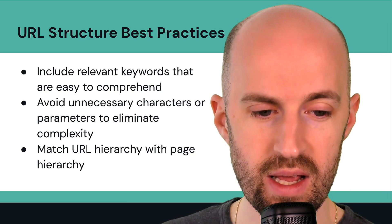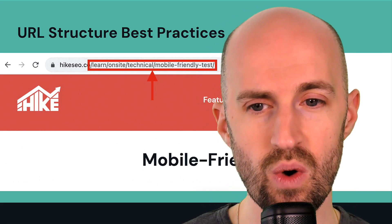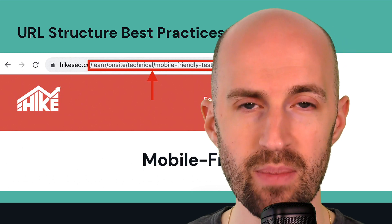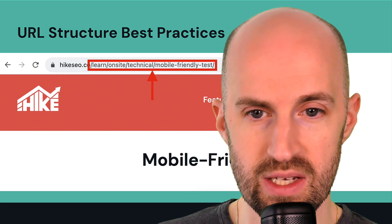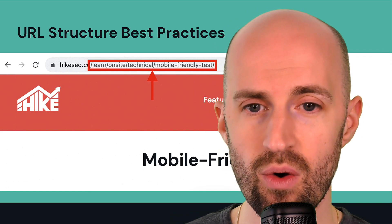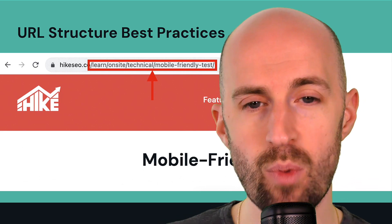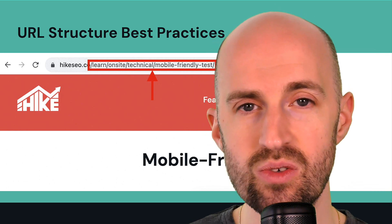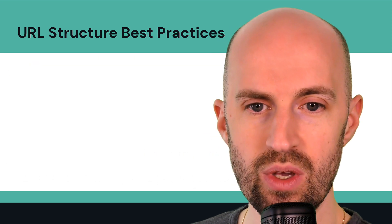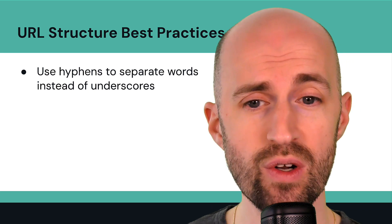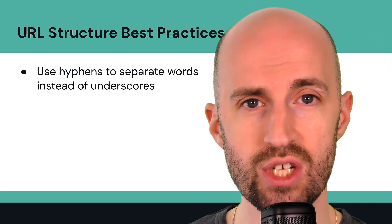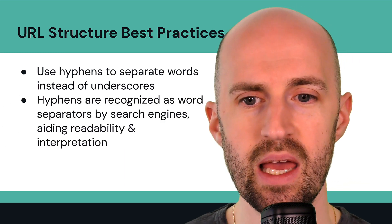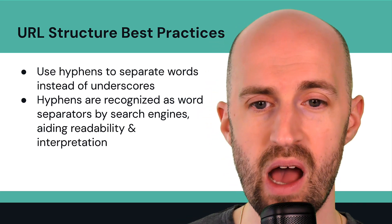Here's an example of a really great URL structure on Hike SEO — the mobile-friendly test page. You can see it's nested under the Learn SEO hub, then under the on-site SEO category, then the technical SEO subcategory, and then the mobile-friendly test article. It's really easy to understand, easy to see where it's located within the site, and easy to read. Ideally, use hyphens to separate words instead of underscores, because Google and other search engines understand that hyphens separate words while underscores combine them.